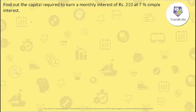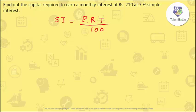This particular question was asked by Hima Bindu from SVP CET College. The question is related to simple interest: find the capital required to earn a monthly interest of Rs. 210 at 7% simple interest. The formula for simple interest is SI = (P × R × T) / 100, where P is the principal or capital, R is 7%, and T is in years. Since we want monthly interest, the time T will be 1/12 of a year.